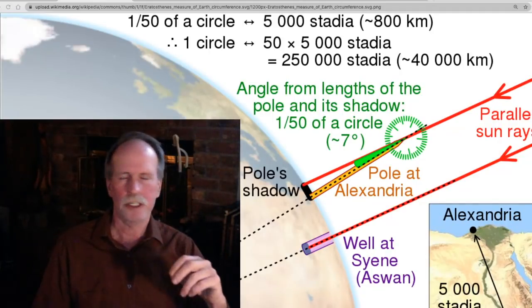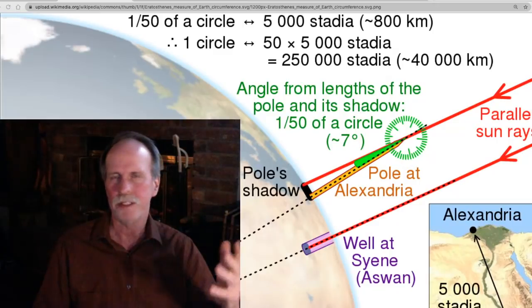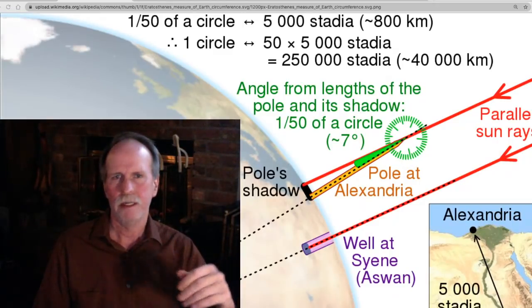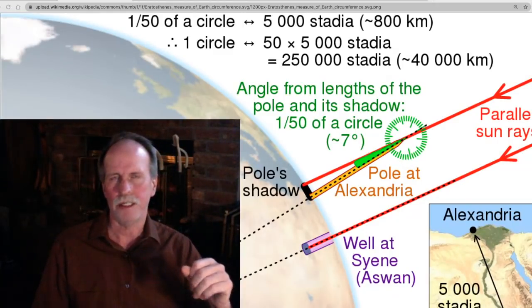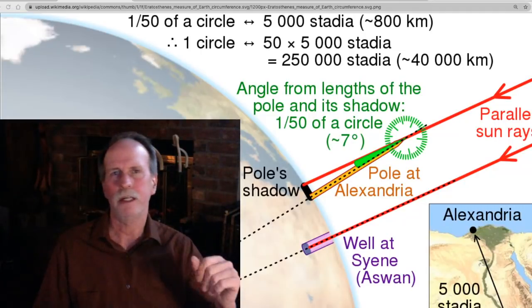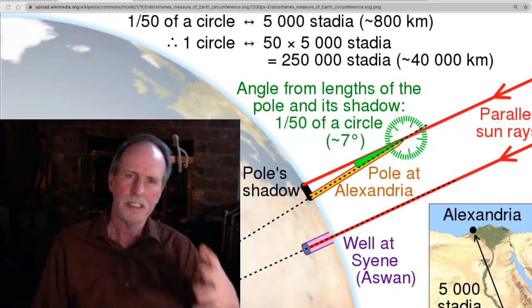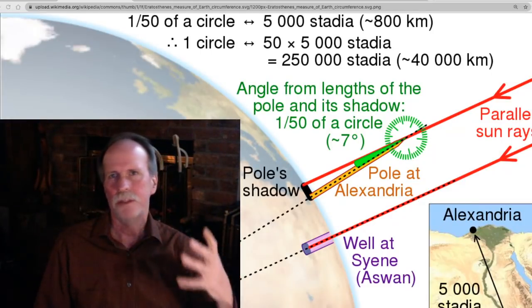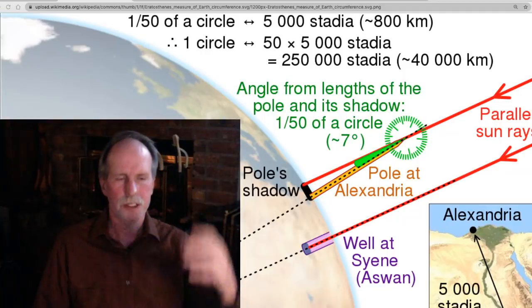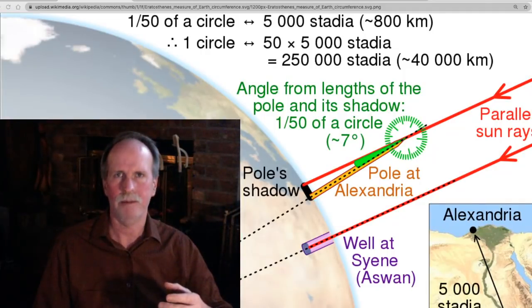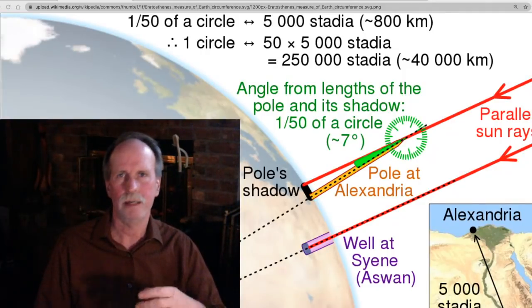The next logical question that they would ask is, well, if it's a sphere, how large is it? So this gentleman Eratosthenes developed a method by which he could calculate the circumference of the Earth. And he did it in a rather elegant way. In Syene, or modern-day Aswan, there was a well that on June 21st, the sun shone directly down and it reflected off the water at the bottom.